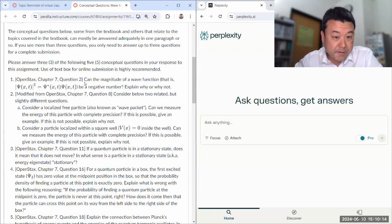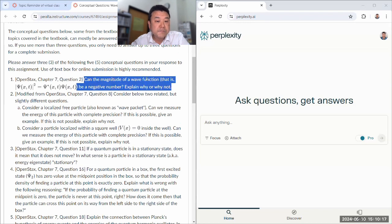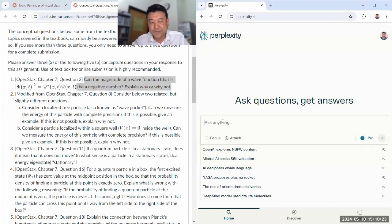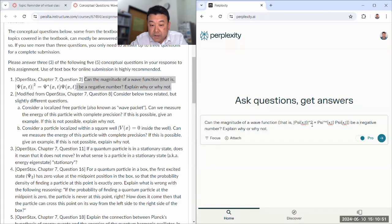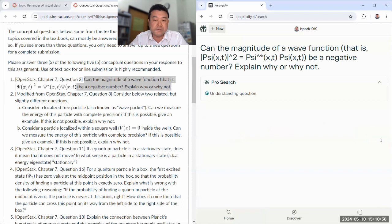So let me start with the question one. Can the magnitude of wave function, that technically isn't the magnitude, but it's fine. Absolute magnitude would be absolute value. So that is absolute value, psi squared, which is defined as psi complex conjugate times psi. I think it'll understand this exponent. This is a complex conjugate, not something else. Be a negative number? I think I don't answer that well. That feels like an easy kind of question that Generative AI does well on.